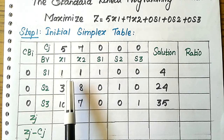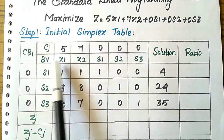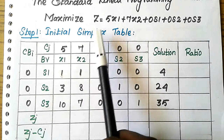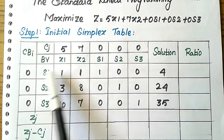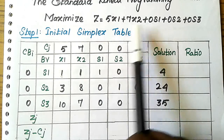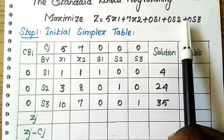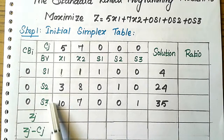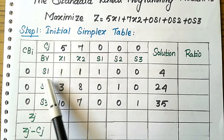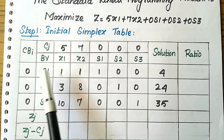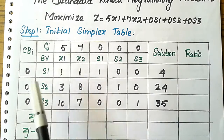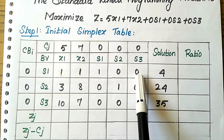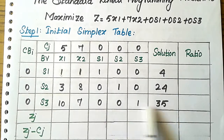In Step 1, we construct the initial simplex table and repeat it until optimality is achieved. We list the variables x1, x2, s1, s2, s3 with their objective coefficients: 5, 7, 0, 0, 0. The basic variables are the slack variables s1, s2, s3. We write the constraint rows: Constraint 1 is x1 + x2 + s1 = 4, and similarly for the second and third constraints.